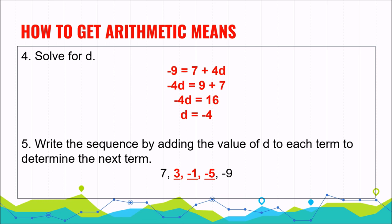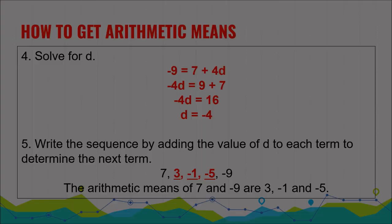Therefore, the arithmetic means of 7 and negative 9 are 3, negative 1, and negative 5.